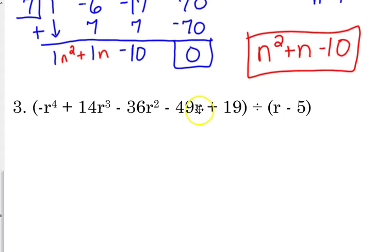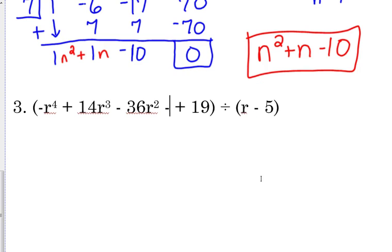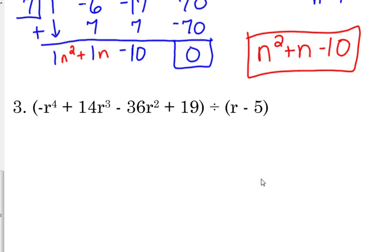Number 3, we're going to modify slightly because I forgot to put one of these examples in there. So let's throw out the R term, so just mark out the R term. Because I want to show you what happens if you're missing a term. So throw out the 49R. Set R minus 5 equal to zero, solve for R. So we add 5, R equals 5. 5 goes on our shelf.